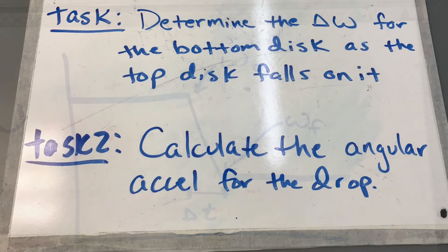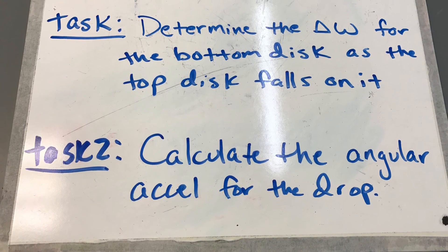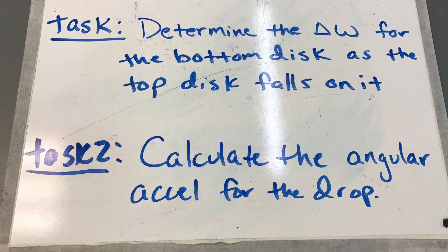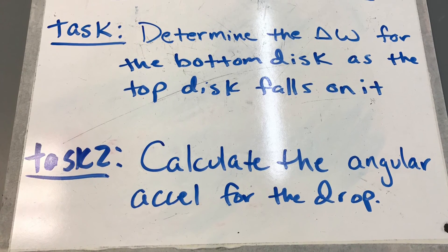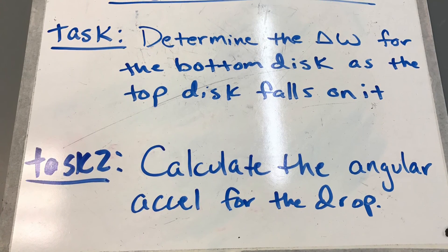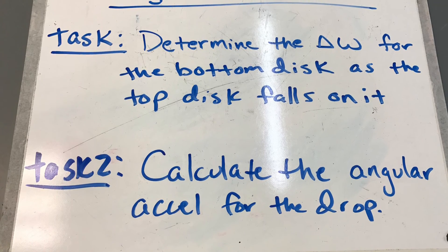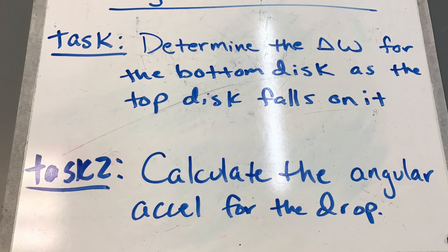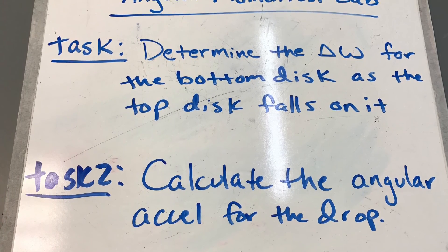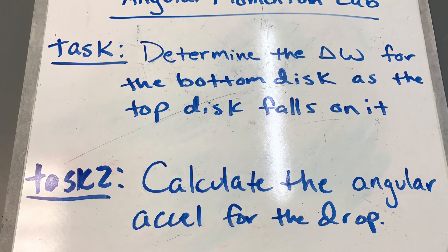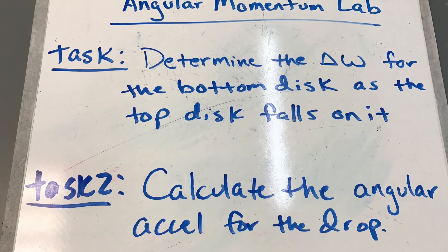Task two is to calculate the angular acceleration. This can be done through a couple of different methods — using our formulas or using slope calculations off the computer. Go ahead and hit pause and jot these down to get started with the lab data collection.